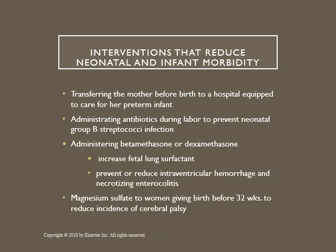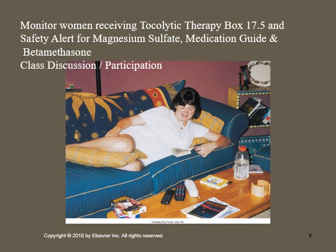Interventions that reduce neonatal and infant morbidity include transferring the mother before birth to a hospital equipped to care for the preterm infant — the mother is the best transporter. Administer antibiotics during labor to prevent neonatal group B streptococcus infection. Administer betamethasone or dexamethasone to increase fetal lung surfactant and prevent or reduce intraventricular hemorrhage and necrotizing enterocolitis. Give magnesium sulfate to women giving birth before 32 weeks gestation to reduce the incidence of cerebral palsy. Monitor the woman closely if she's receiving tocolytic therapy; refer to Box 17.5 and the safety alert for mag sulfate medication guide and betamethasone.